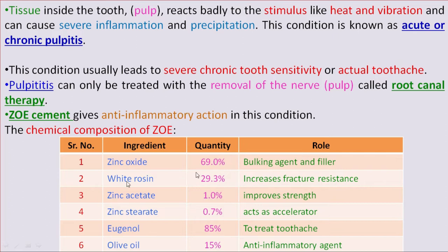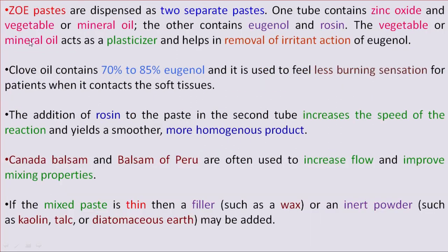The quantity of Zinc Oxide is 69% and it acts as a bulking agent and filler. White Rosin is 29.3% and it increases fracture resistance. Zinc Acetate is 1% and improves the strength. Zinc Stearate is 0.7% and acts as an accelerator. The liquid component Eugenol is present in 85% quantity to treat toothache, while Olive Oil is present at 15% and acts as an anti-inflammatory agent.